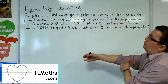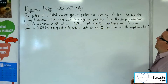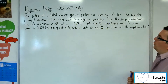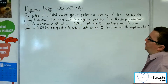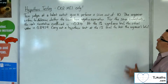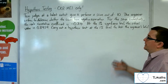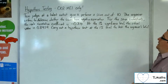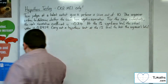In this video we're looking at two judges at a talent contest give a performer a score out of 10. The organiser wishes to determine whether the scores have negative association. For the seven contestants, the rank correlation coefficient is minus 0.714. At the 1% significance level, the critical value is 0.8929. Carry out a hypothesis test at the 1% level to test the organiser's belief.